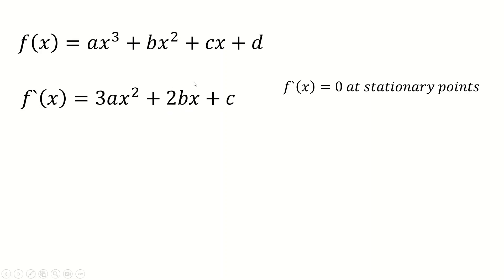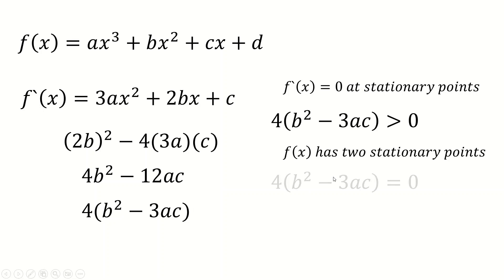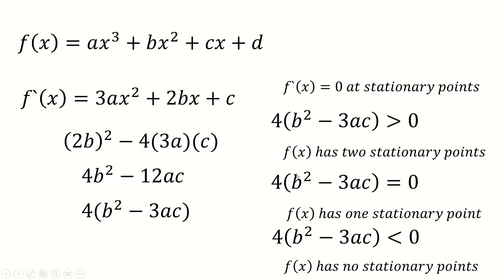And the discriminant is going to be 2b all squared minus 4 times 3a times c. That would be the discriminant of this, which of course simplifies to this there. And I can factorize out a 4 from that and get this here. And so that's the discriminant of f dash of x. When f dash of x is zero, that's stationary points. So if this is greater than zero, then I'll have two stationary points. If it's equal to zero, I'll have one stationary point in this original cubic. And if it's less than zero, I'll have no stationary points on the cubic.